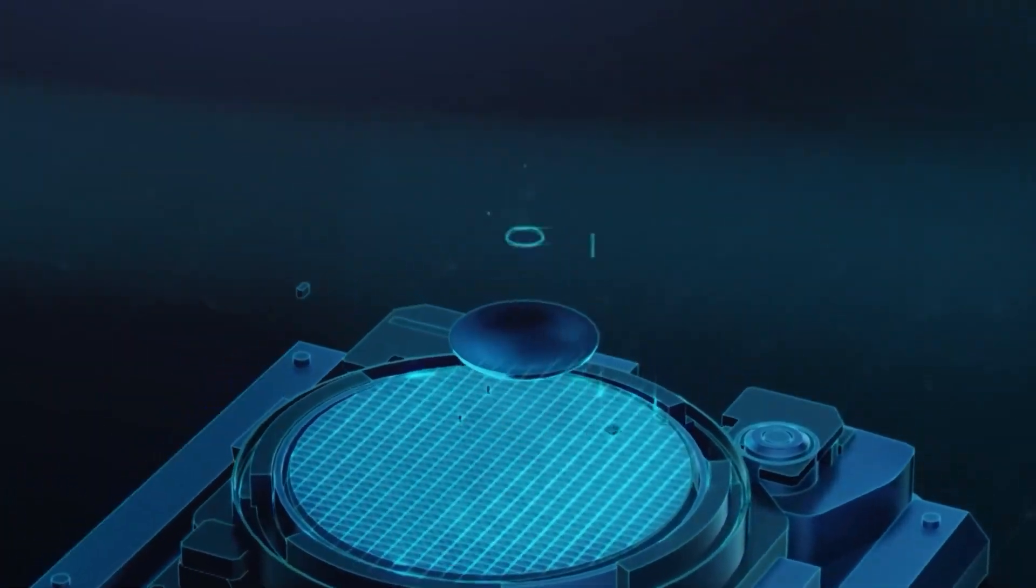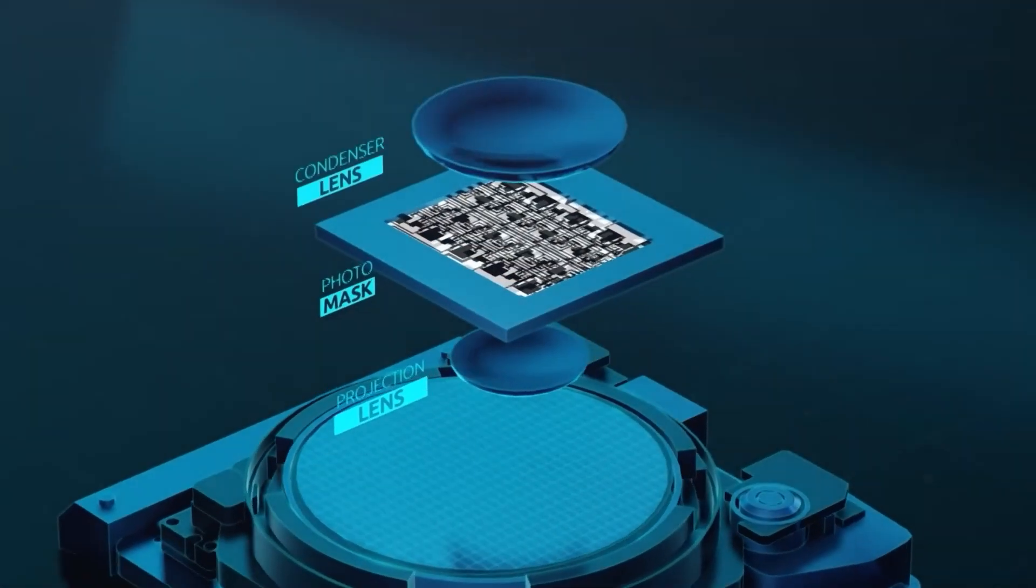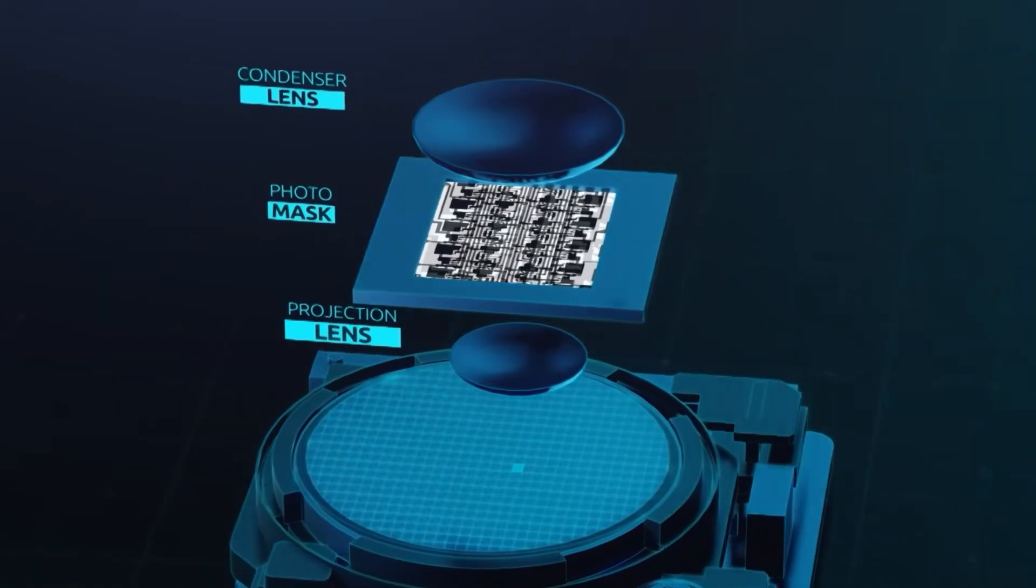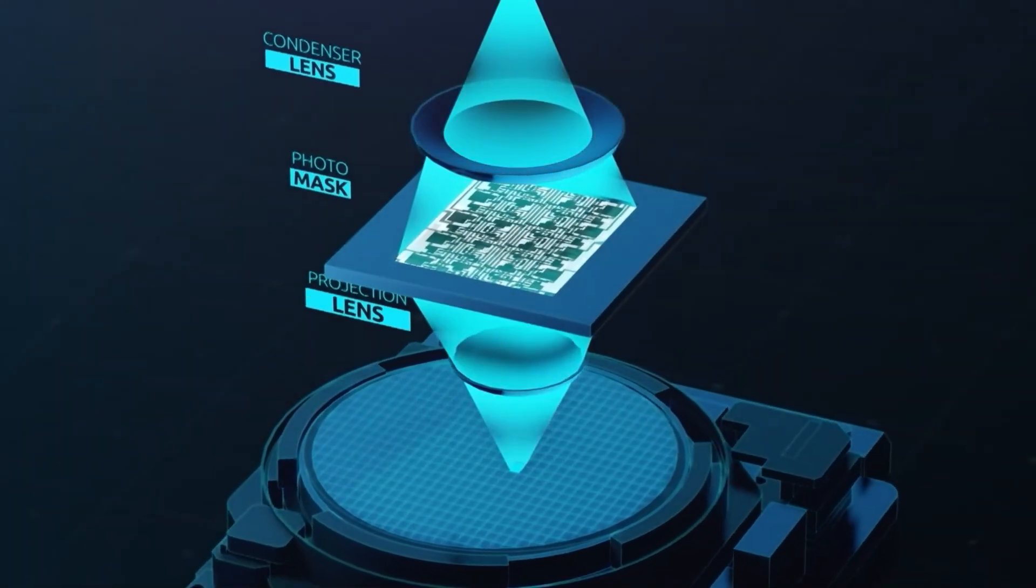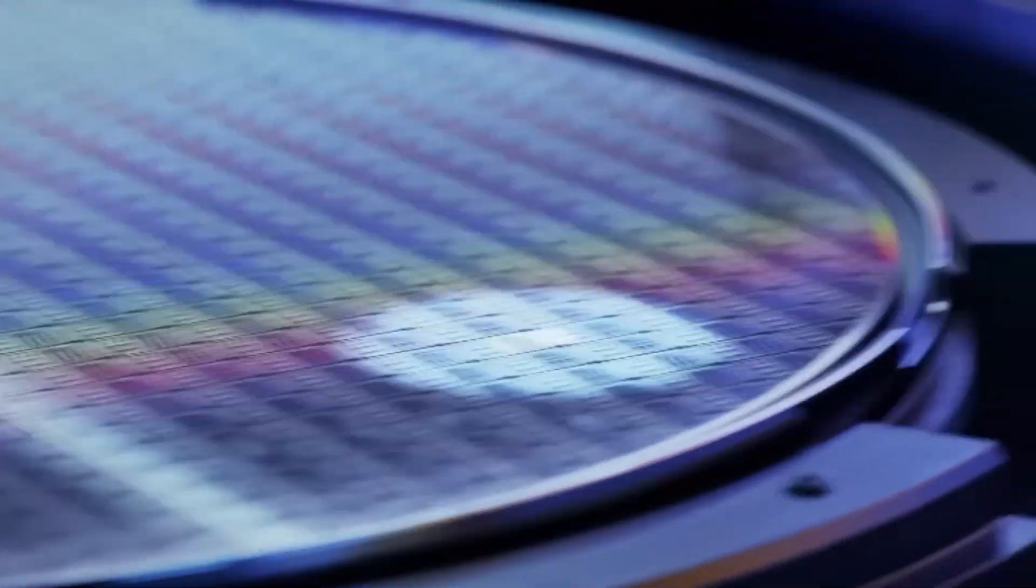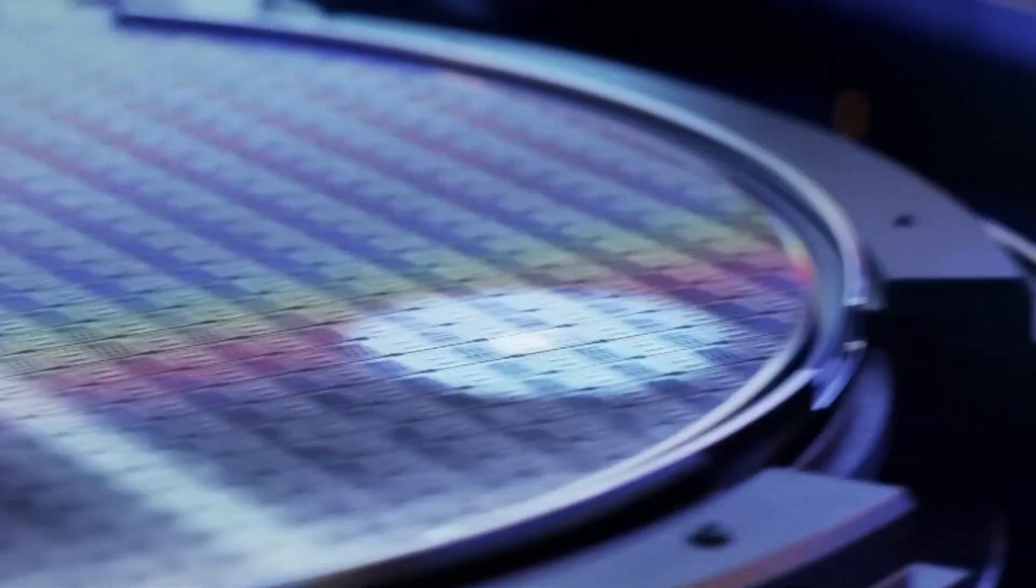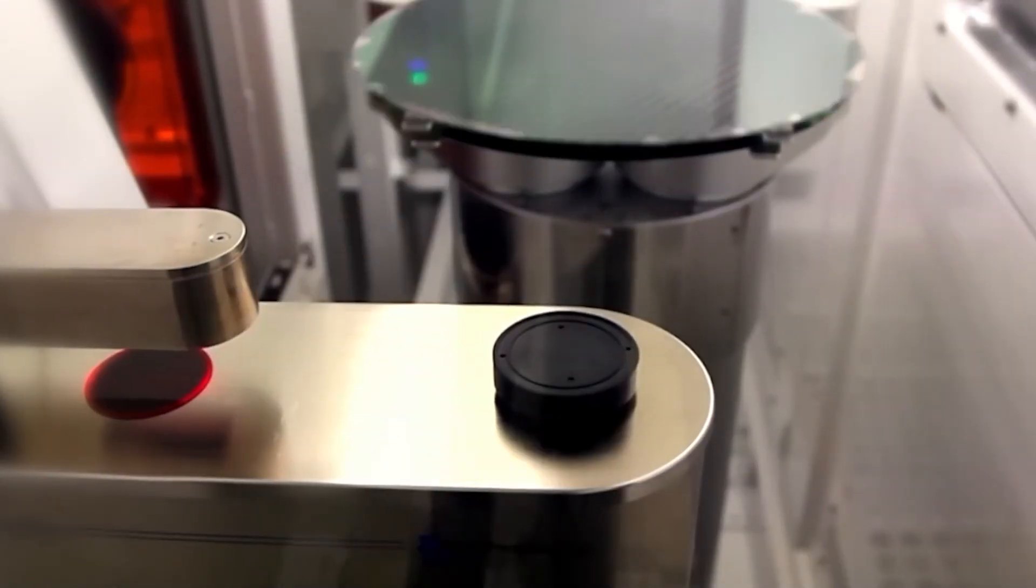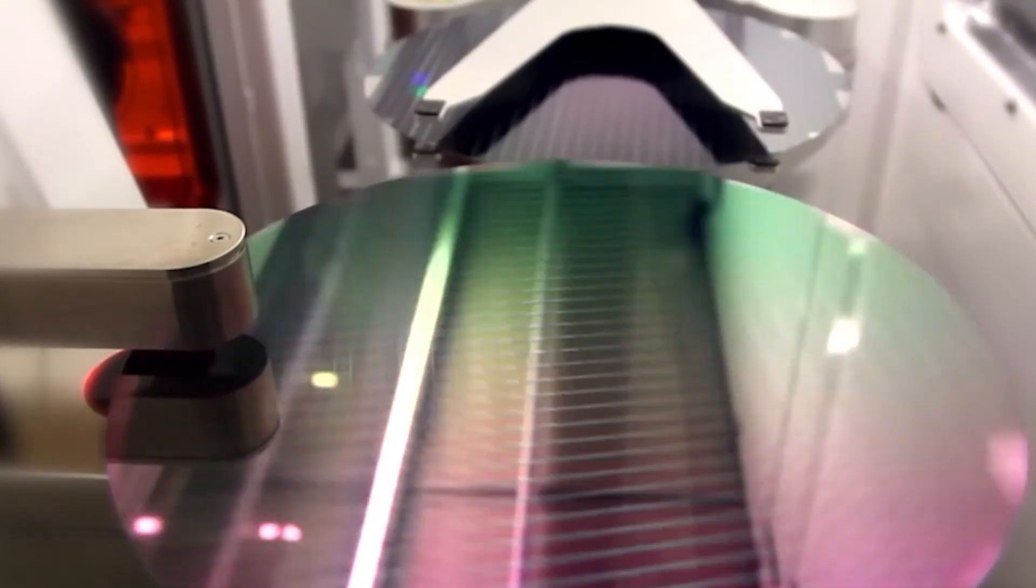Once the initial design is printed, the wafers undergo layer after layer of additional processing. Using a combination of coating, etching, and layering machines, up to 100 meticulously aligned layers are added to build the full structure of the chip. These machines work with micrometer level precision, ensuring that every layer aligns perfectly with the ones beneath it.